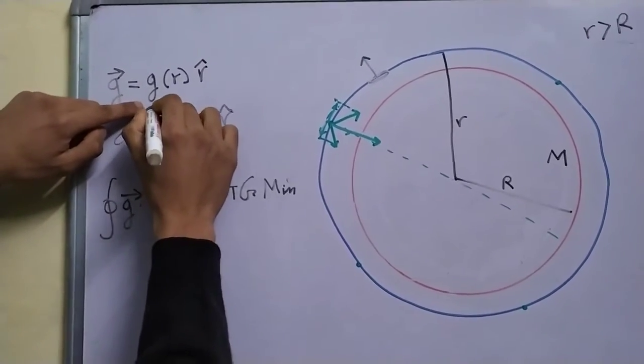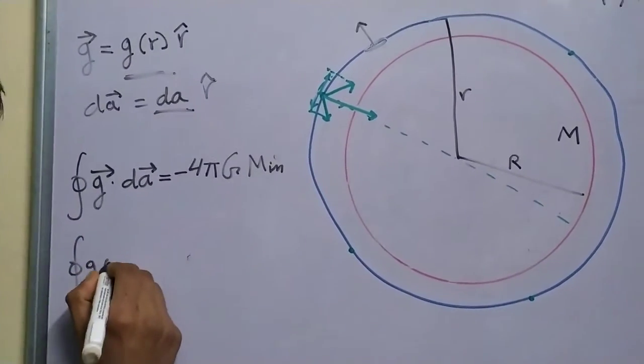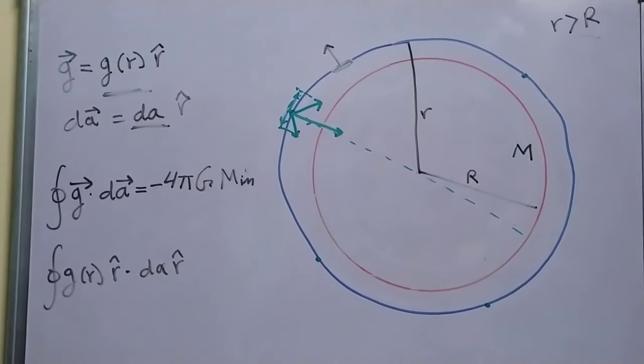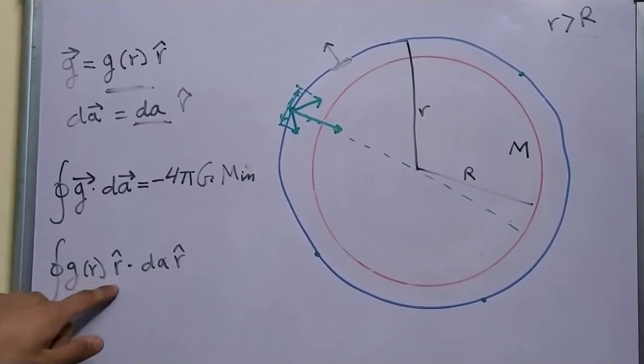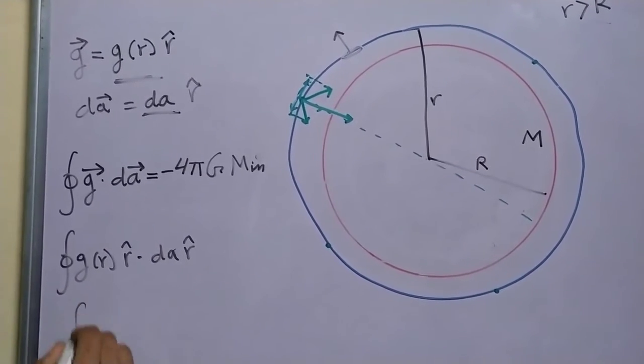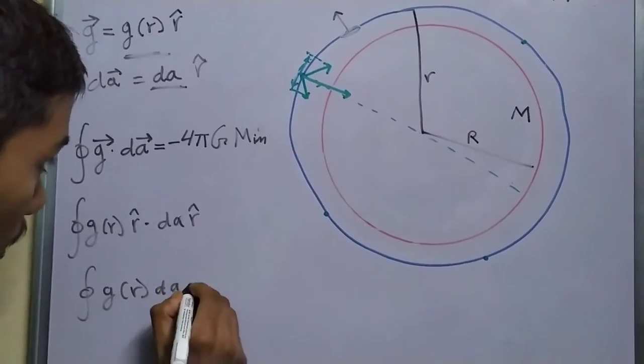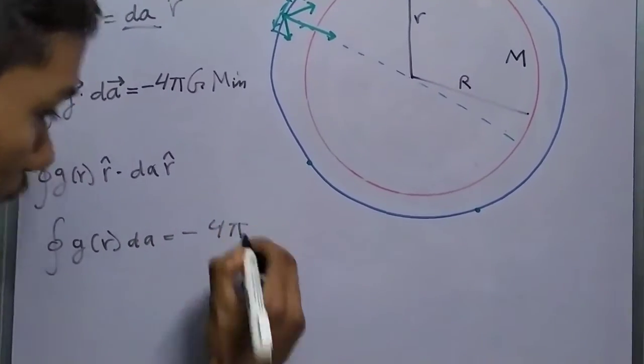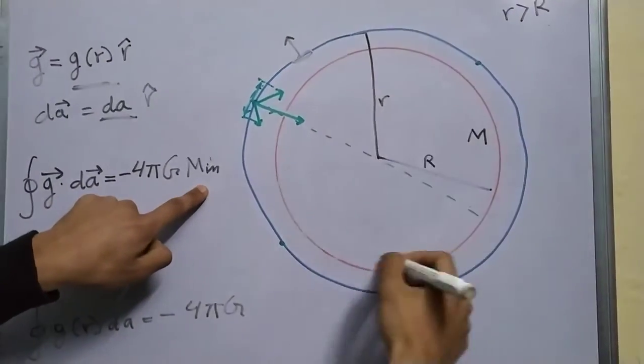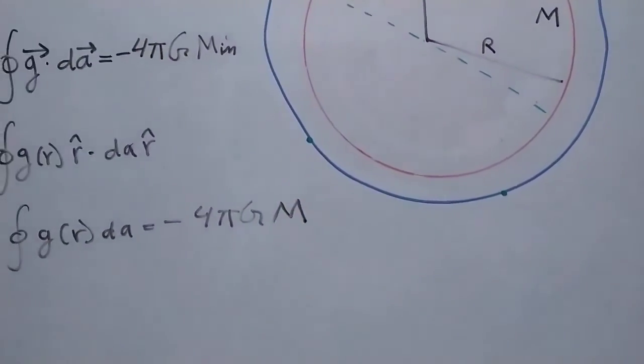Now here is the important part. Let me write this down first. So we get left with G of R R cap dot dA R cap. Now R cap dot R cap will be just one, so you'll be left with integral G of R dA equal to minus 4 pi G m internal. So m internal is just the mass of this sphere, 4 pi G M.